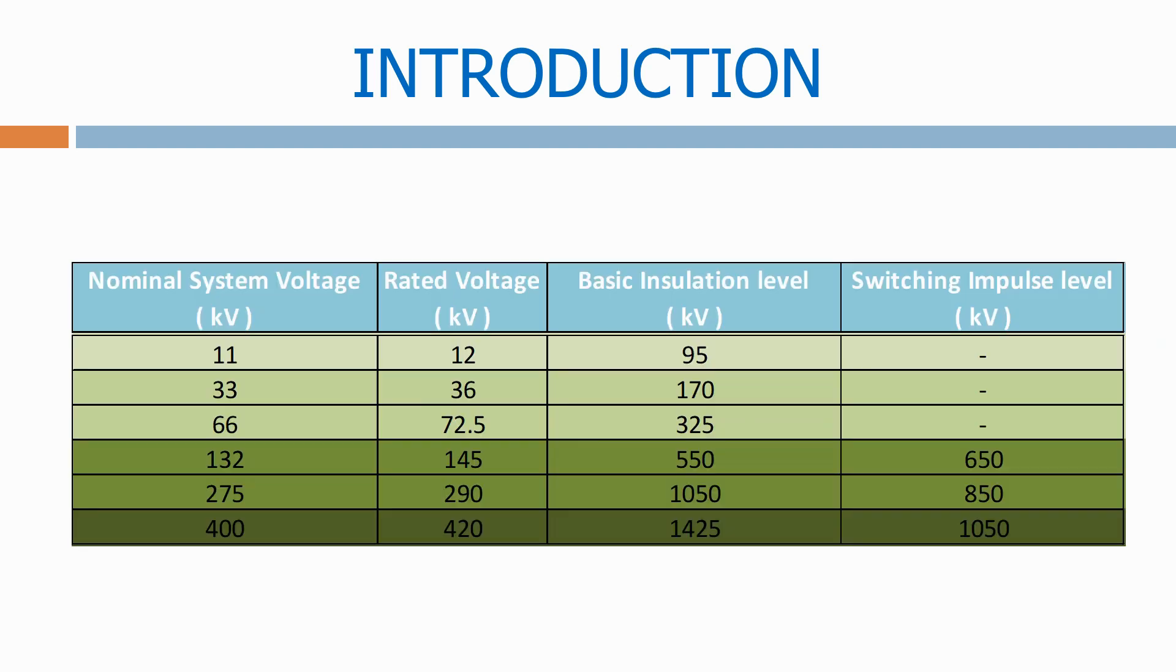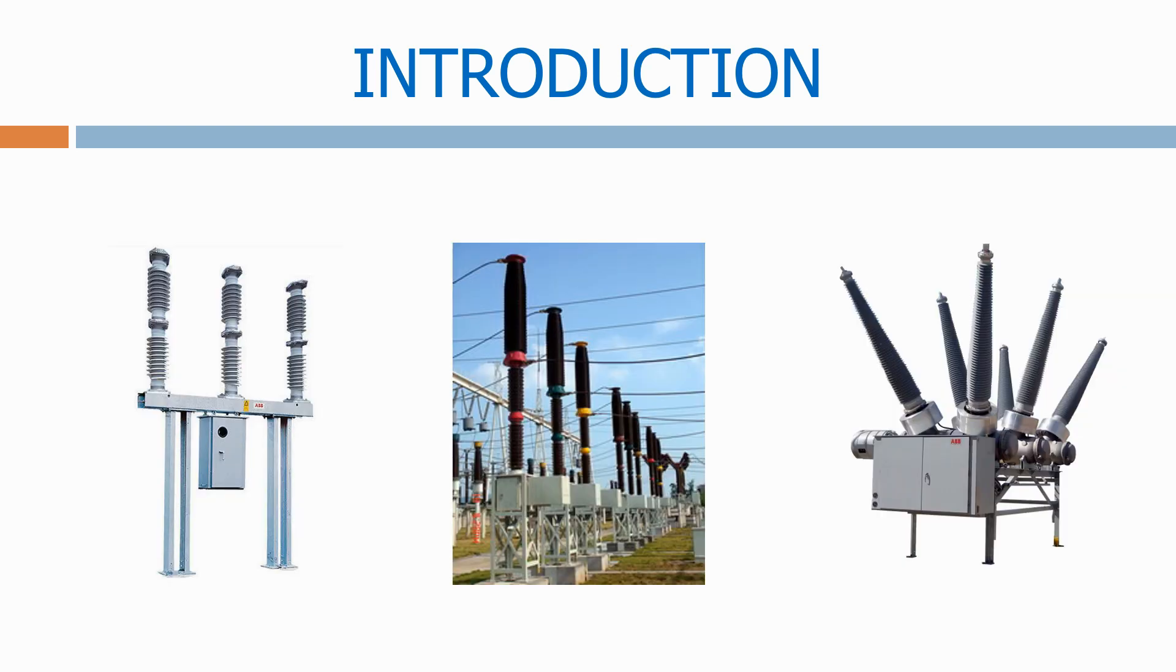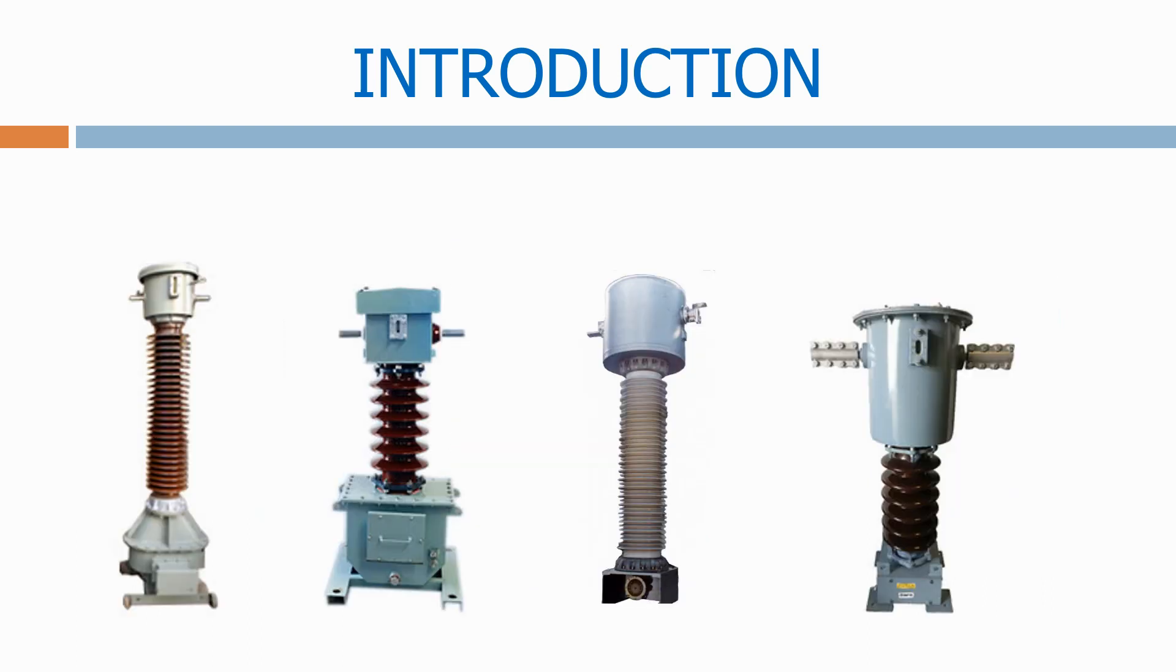In the first section we introduce all of the basic parameters of an air insulated substation and look at all the main equipment that we use including circuit breakers, isolators, instrument transformers and busbars.